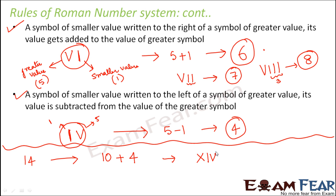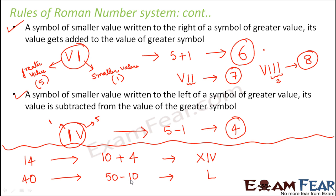Let us say you want to write 40 in Roman numerals. 40 is 50 minus 10. We already know 50 is represented by a capital L. So we want to subtract 10 from 50, and for subtraction we have to write it on the left hand side. 10 is X, so XL is how we represent 40. This is how we can represent any number in its Roman numeral.